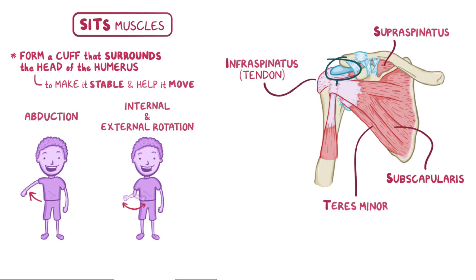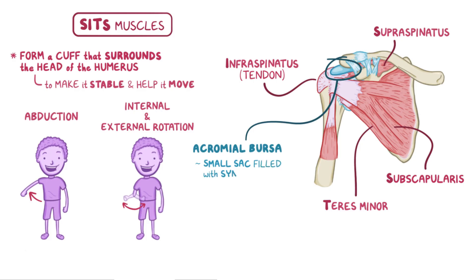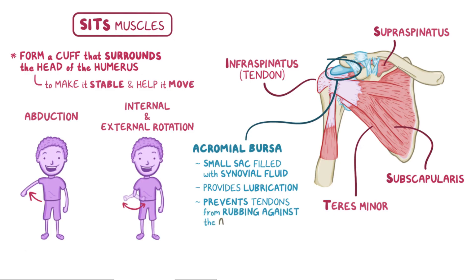Below the acromion lies the acromial bursa, which is a small sac filled with rubbery synovial fluid that provides lubrication and prevents the rotator cuff tendons — especially the supraspinatus tendon — from rubbing against the acromion as the joint moves.